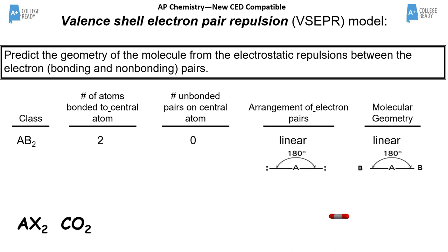Once we have the Lewis structure and have used formal charge to identify the best one, we can determine molecular geometry. To find the shape, we look at all regions of electrons around the central atom — in general notation AB₂ — considering how many things are attached versus how many lone pairs are on the central atom. Two regions of electrons gives a 180-degree bond angle: a linear shape.